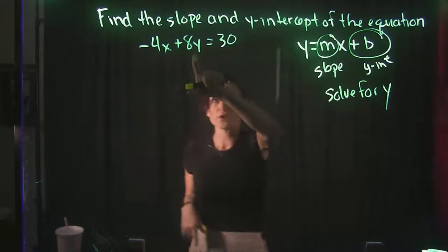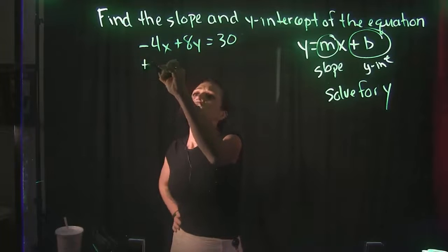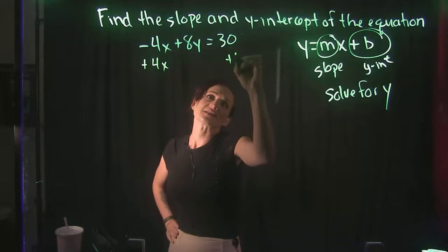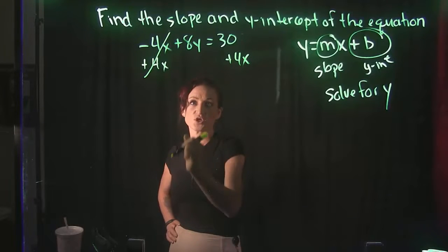Solving for y, the first thing we need to do is get rid of this -4x. So we're going to get rid of it by adding it to both sides. -4x + 4x goes away,